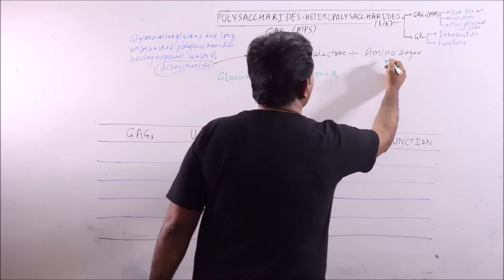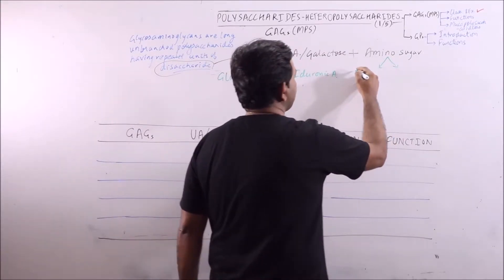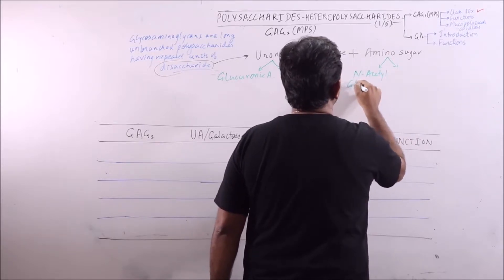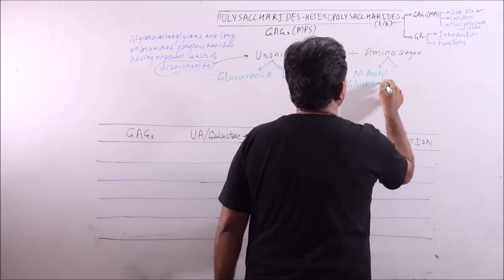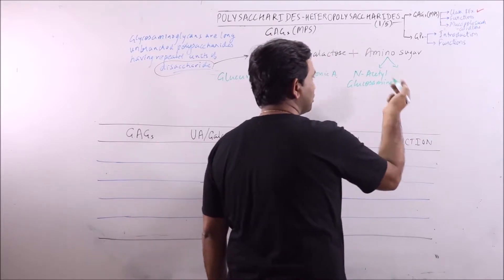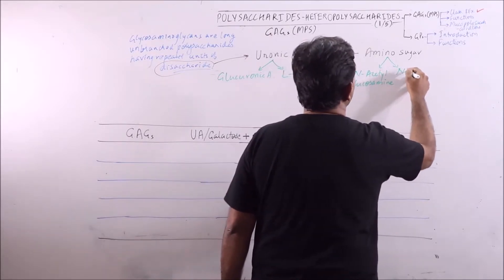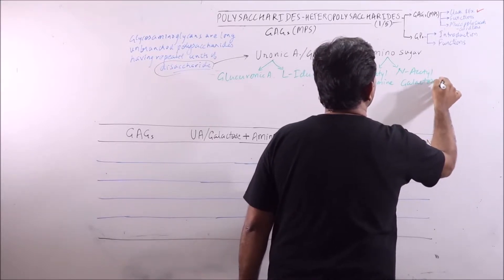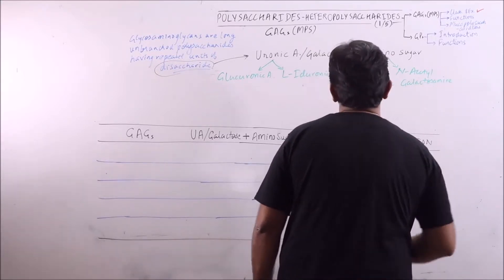While if amino sugar is there then it will be either N-acetyl glucosamine or simply glucosamine or N-acetyl galactosamine.